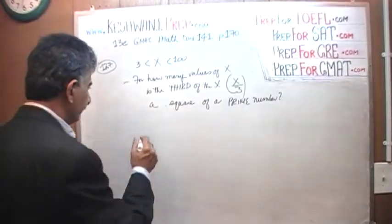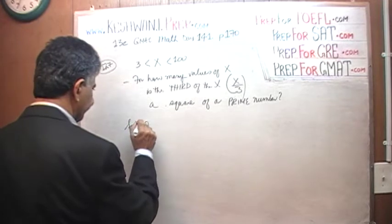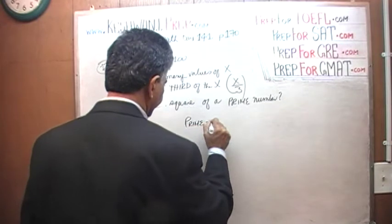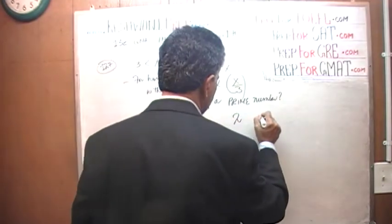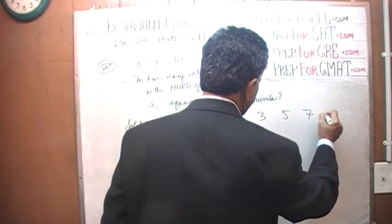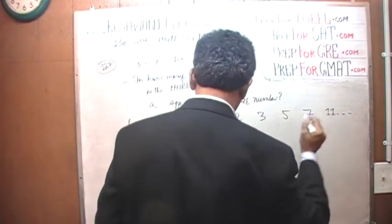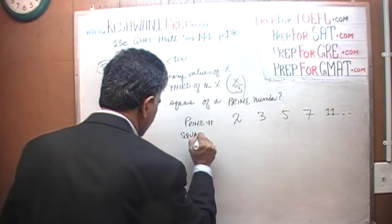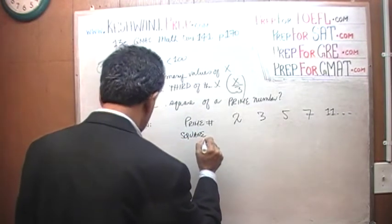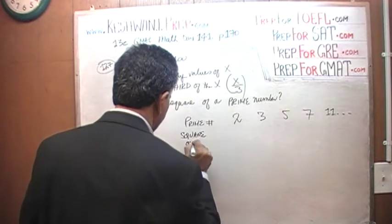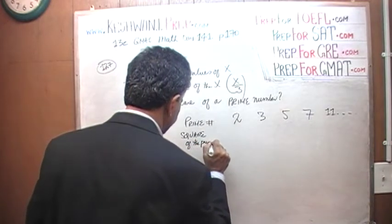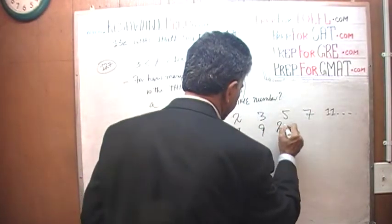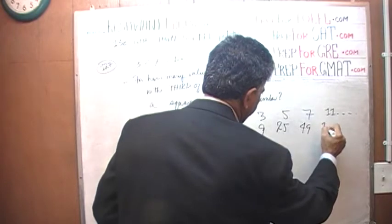Let's first list our prime numbers. Here is our solution. The prime numbers are: 2, 3, 5, 7, 11, and so on. The square of each prime number would be: 4, 9, 25, 49, and 121.